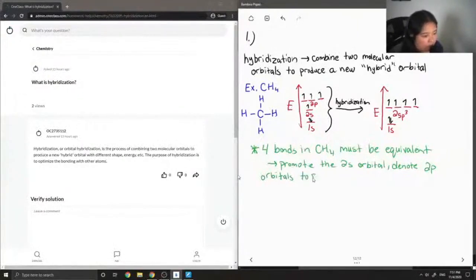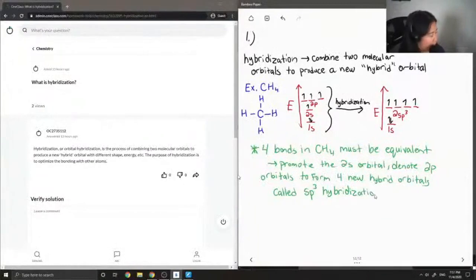And this is to form four new hybrid orbitals called sp3, sp3 hybridization, making them all equal in energy.